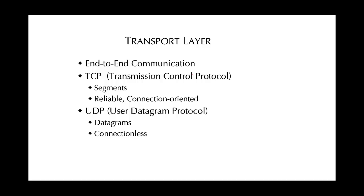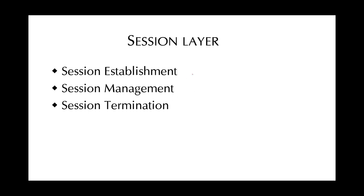The transport layer provides end-to-end communication by hiding the underlying network from higher layers and allowing endpoints to establish direct connections. It generally provides at least two services: a reliable connection-oriented service (TCP) and an unreliable connectionless service (UDP). TCP requires a connection to be established between endpoints before they can exchange data; UDP sends data without any prior negotiation. The PDU for TCP is called a segment and for UDP a datagram. The session layer manages sessions between communicating applications on different systems, allowing one application to call another, exchange data, and then terminate the call. It covers session establishment, session management with synchronization points, and session termination.